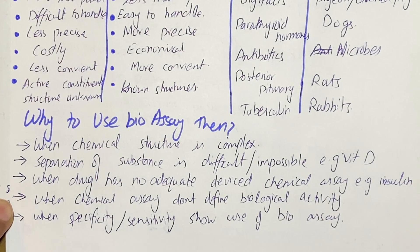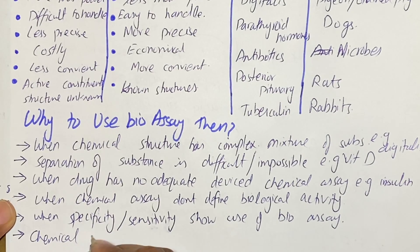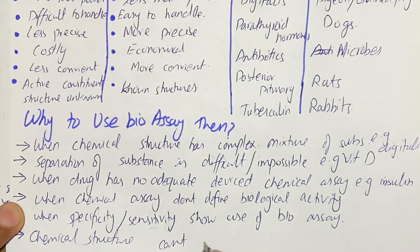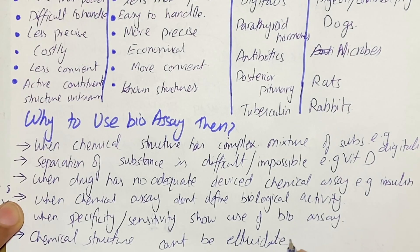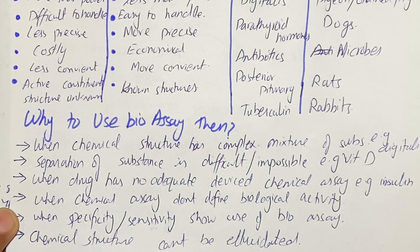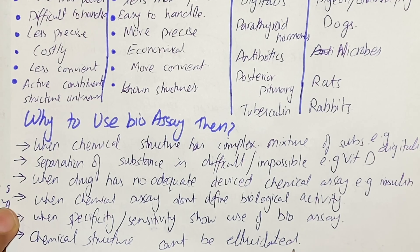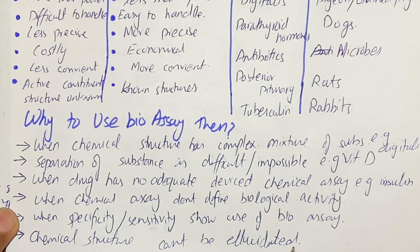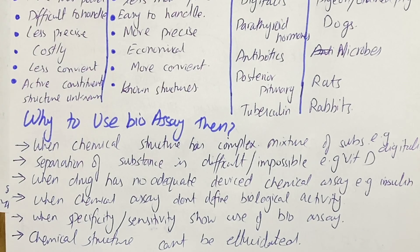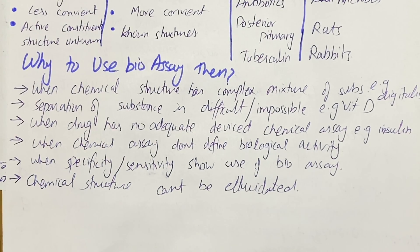If the chemical structure cannot be elucidated, we again use bio assay, since known structures are required for chemical assay. So these are some reasons why we use bio assay despite its negative points such as difficulty in handling, more manpower requirement, higher cost, less precision, and less convenience.